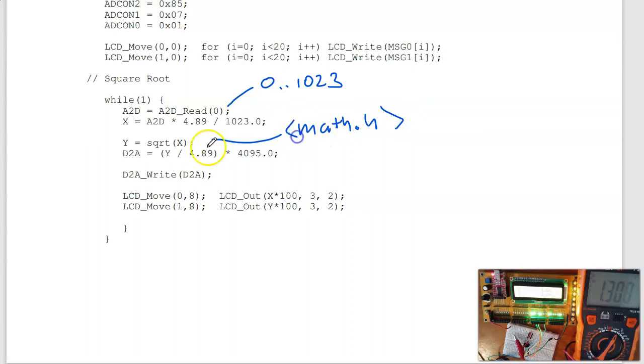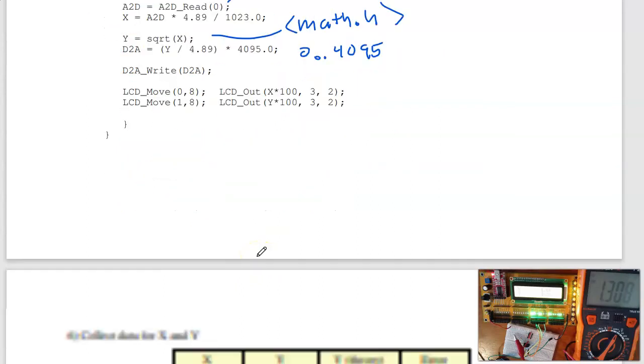So, you have to include math.h for this to work. Then, I do the D to A. This goes from 0 to 4095. So, full scale is 4.89 volts. On my board, it's supposed to be 5 volts. It's this percentage of full scale. That percentage of 4095. Send that to the D to A and repeat. And what you get is the D to A output is the square root of X. Y is the square root of X.